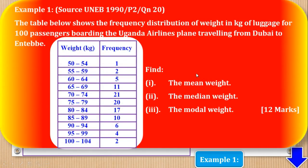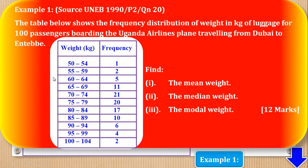Before answering the questions, the first thing to do is to draw a table including all the columns that will be used. We need a column for frequency f, a column for mid mark x, and a column for fx to answer the mean. For the median, we need a column for cumulative frequency CF. For the mode, we need the frequency column. We start by putting the class column, which are the grouped weights.